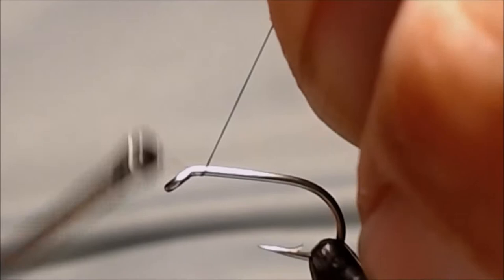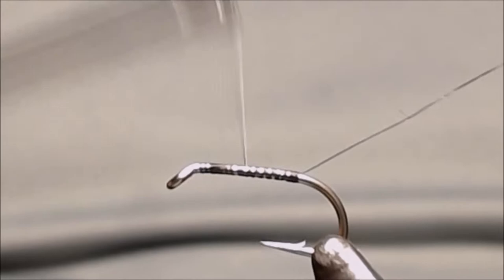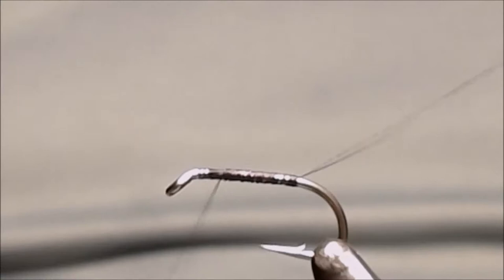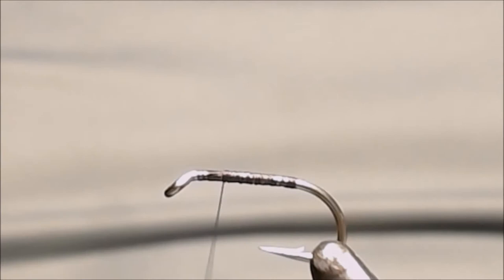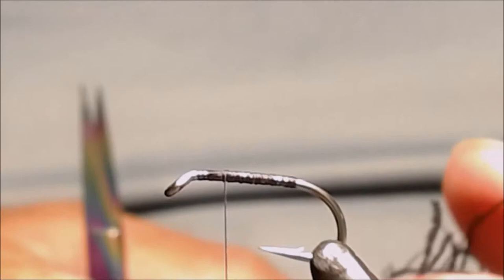Lay a base of thread down the shank and we'll cut off our tag end. For the body we're going to be using some peacock herl. You can also use a synthetic peacock herl if you would like to.